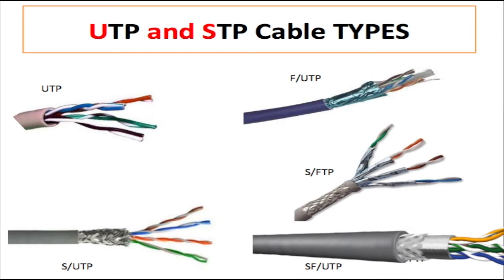Hello, this is Trevor from Telecom Training, and today we're going to talk about Ethernet cables. Ethernet cables are made from twisted pair. You have two types of twisted pair: UTP and STP. UTP stands for unshielded twisted pair and STP stands for shielded twisted pair. Here's an example of a UTP type cable — you just have an outer jacket with four pairs of twisted wire inside.